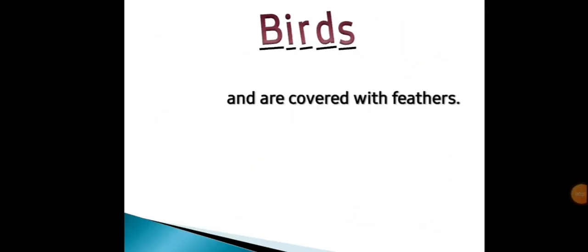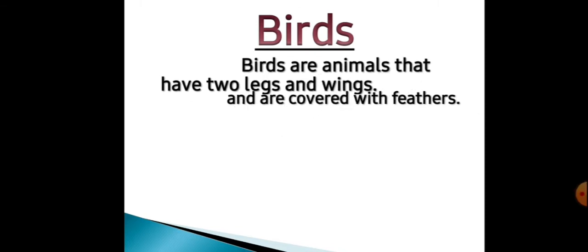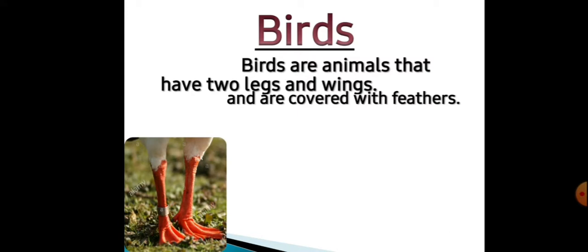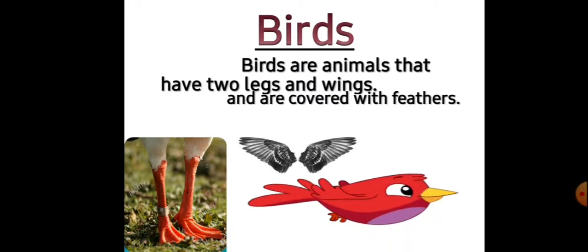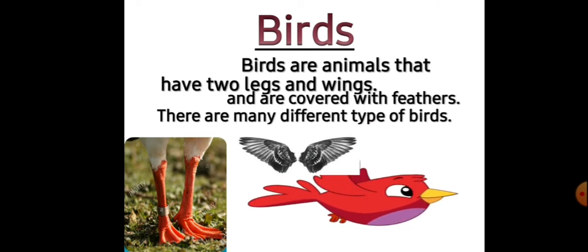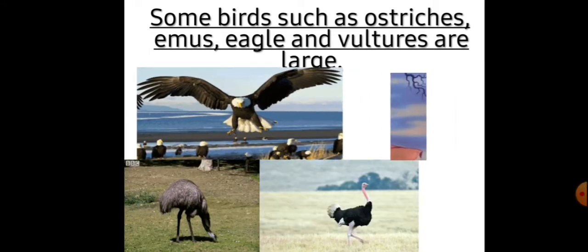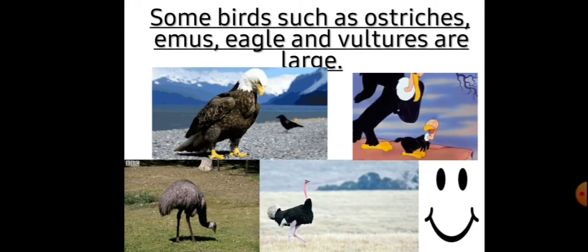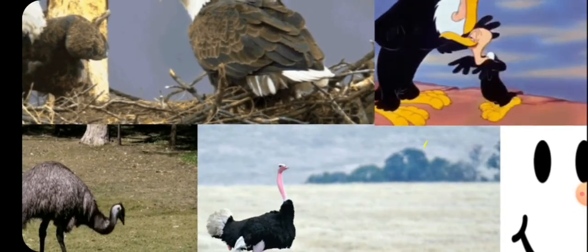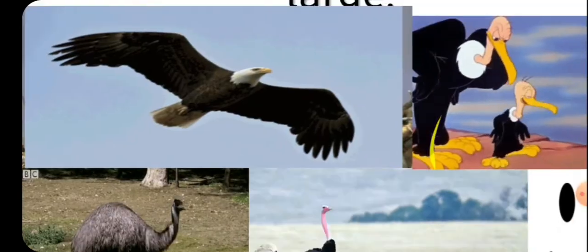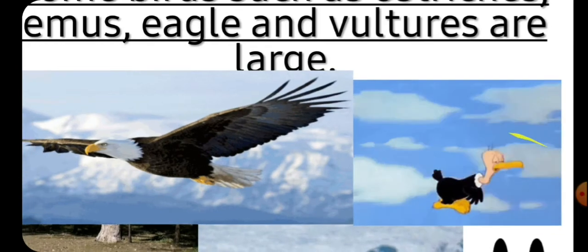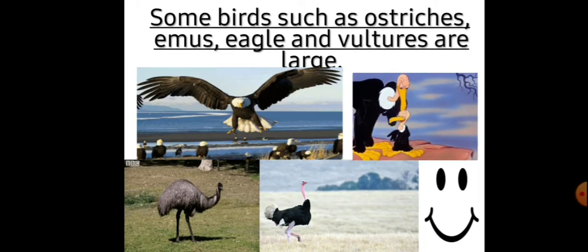Next, birds. Birds are animals that have two legs and wings and are covered with feathers. Jo birds hote hain, unke do legs aur wings hote hain, aur jo wings hote hain, woh feathers se pure bhare huye hote hain. There are many different types of birds. Some birds such as ostriches, emus, eagles, and vultures are large birds.